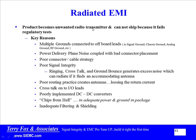A product becomes an unwanted radio transmitter and cannot ship when it fails regulatory tests. The key reasons include: first, multiple grounds connected to off-board leads — signal ground, chassis ground, analog ground, RF ground, etc. Anytime there are multiple things called ground, radiated emission problems are almost certain. Second, power delivery and plane noise coupled with bad connector placement again creates a dipole antenna with a noise generator in the middle. Third, poor connector or cable strategy — if you don't have adequate return current paths through the connector or cable, you end up with an antenna and likely a differential-to-common-mode noise conversion mechanism.